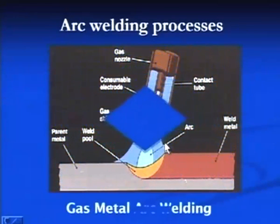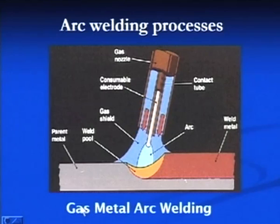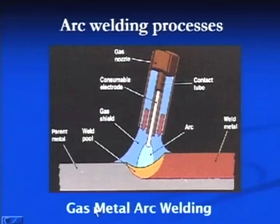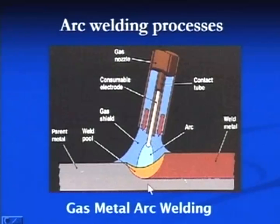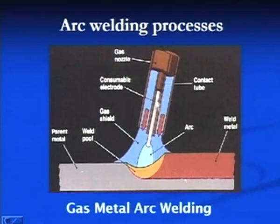The next process is normally used for mass production and for producing joints of metals which are active to atmospheric gases. In this process, a consumable electrode is used and the arc is established between the electrode and the work piece. To protect the molten weld pool which is generated, inert shielding gas is normally used.